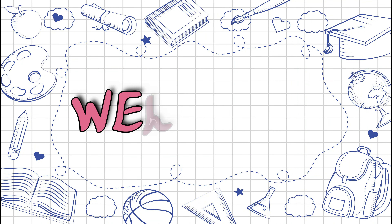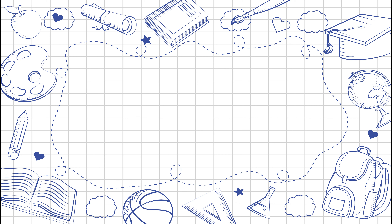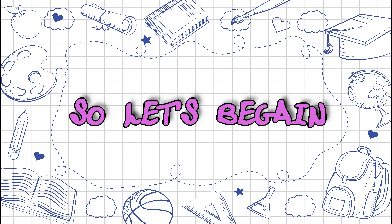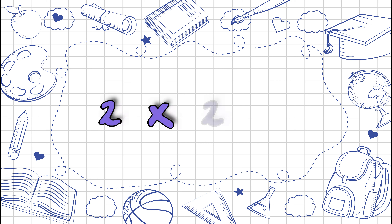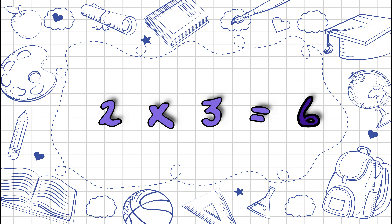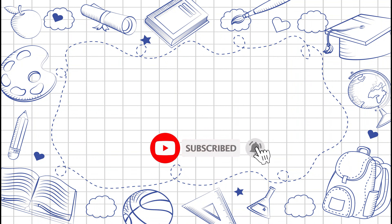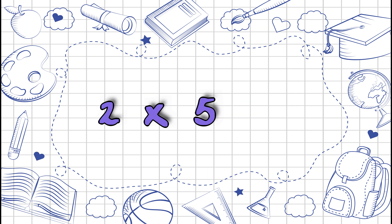Hello children, welcome back to my channel. Today we are going to learn the table of two. So let's begin. Two ones are two, two twos are four, two threes are six, two fours are eight, two fives are ten.